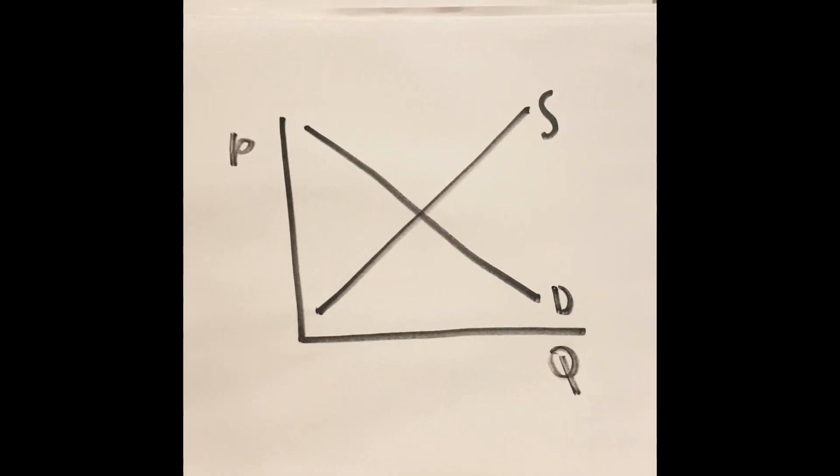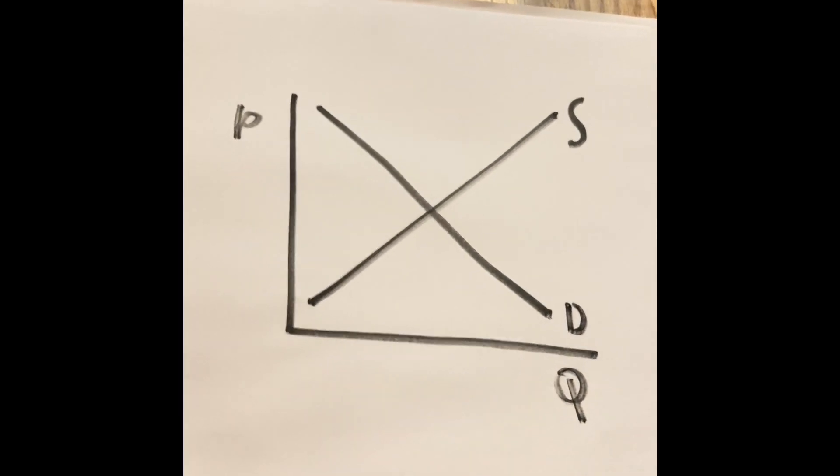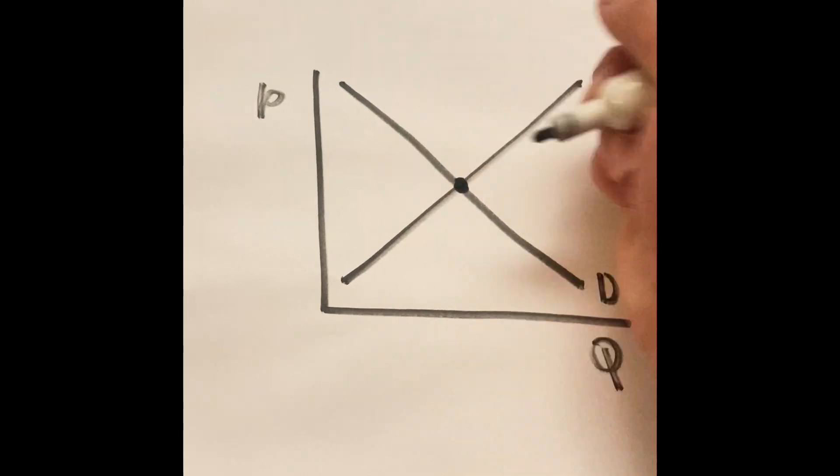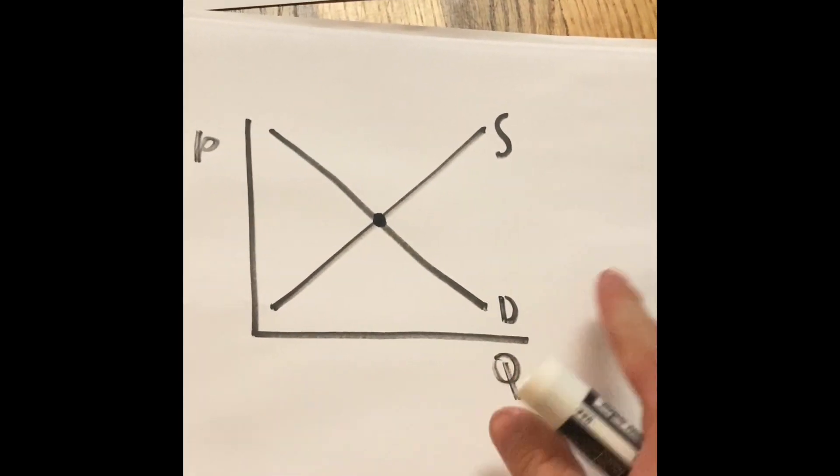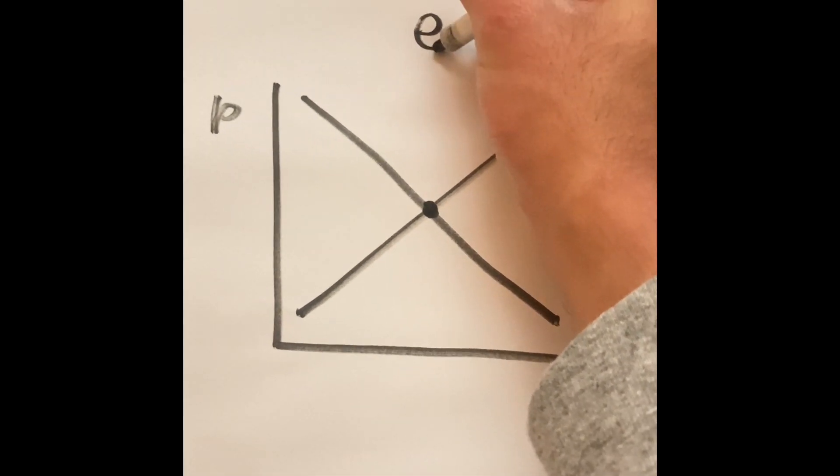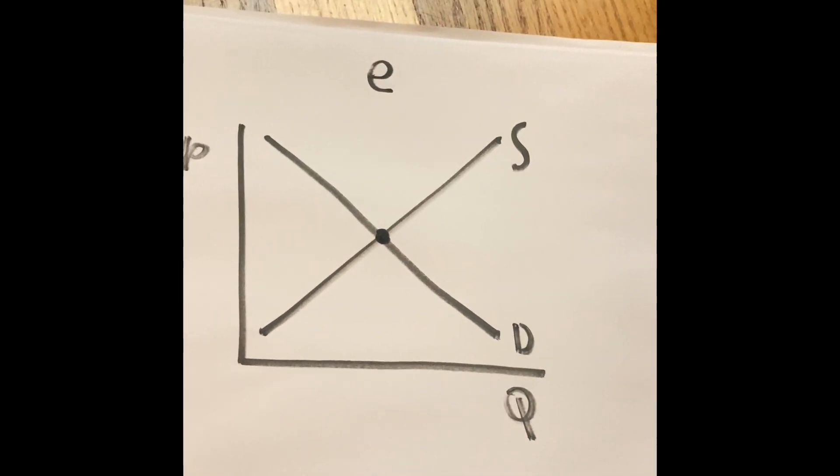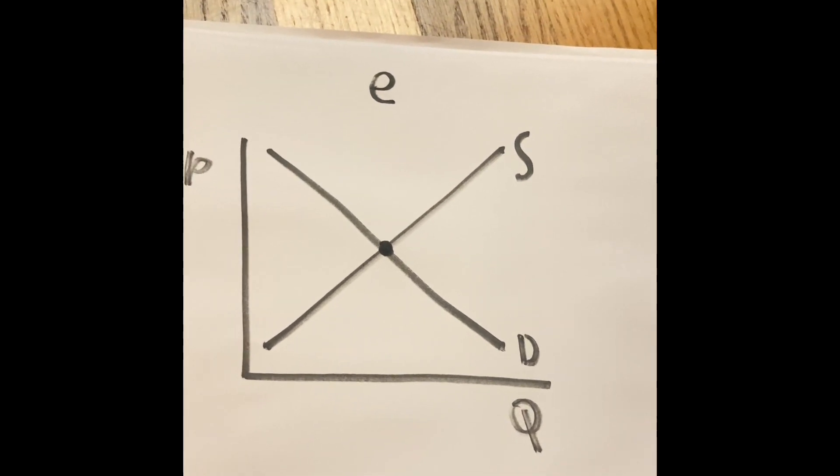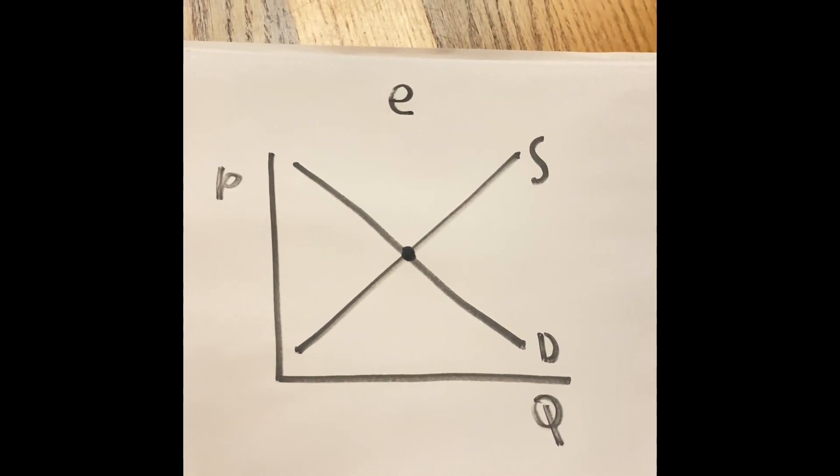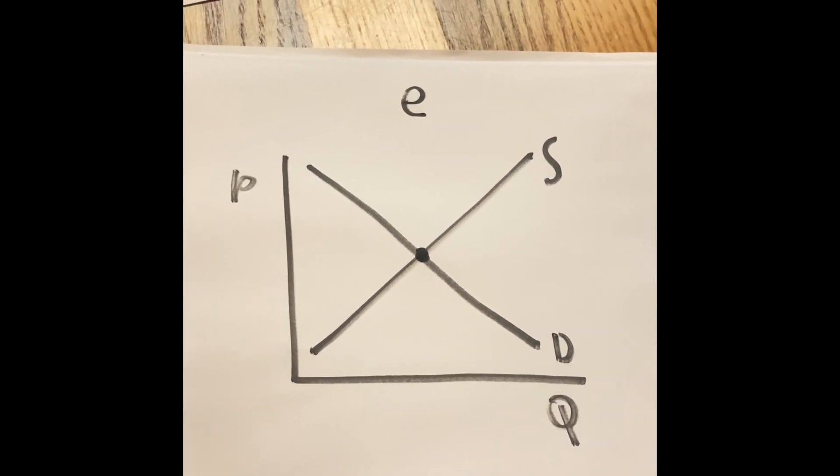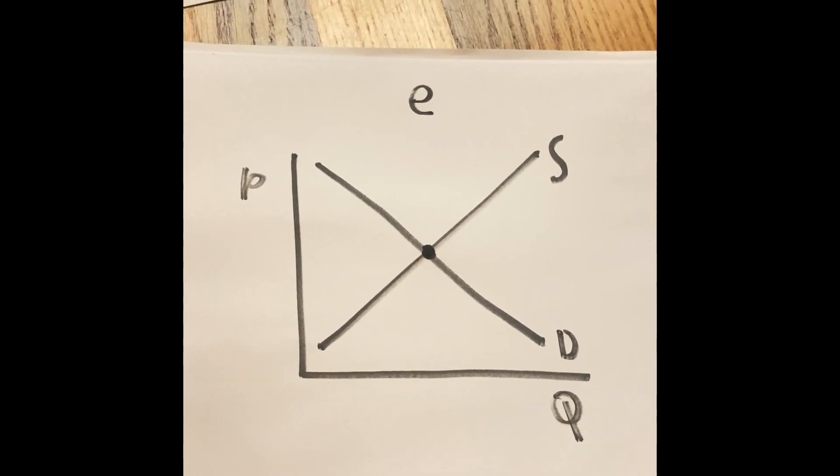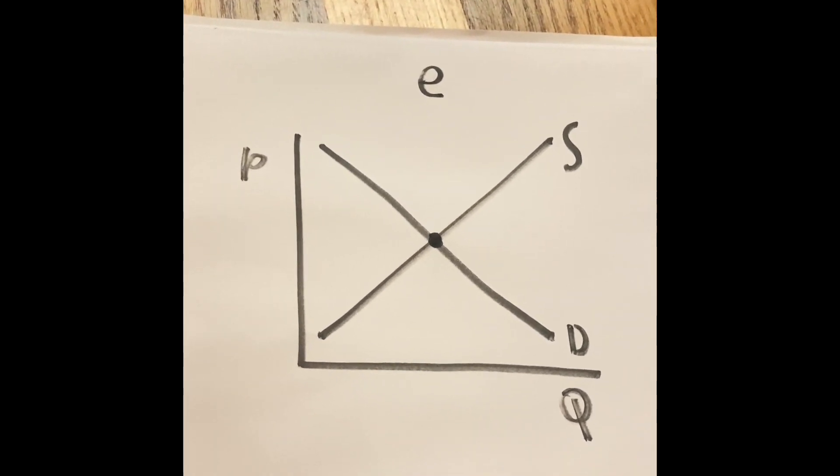In this video, we're going to only talk about changing the price. The middle of where the supply and the demand slopes meet is called an equilibrium. We'll denote that as the letter E. And that is the agreement between the buyers and the sellers. The buyers want to get a low price to get the same product. But the sellers want to make a profit at a higher price. How can we agree?